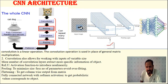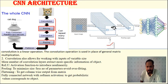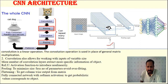A single filter won't work because we need to extract different types of information from the image. So we use multiple filters. Each filter generates one output plane or layer. Another filter extracting different information generates another layer. By stacking all output layers, we get width, height, and depth. The depth depends on the number of filters used.